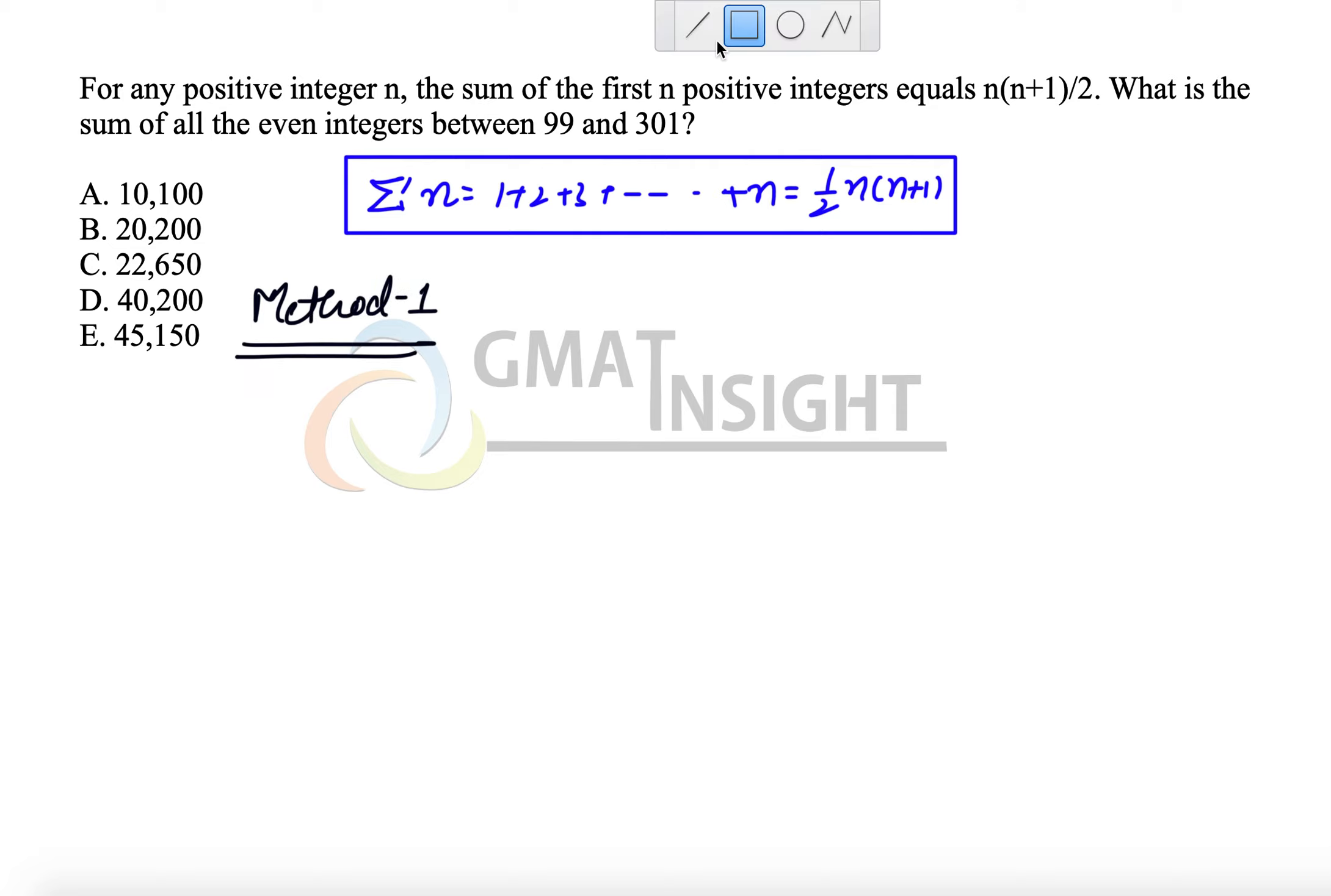Method 1 is based on the principle of arithmetic progression in which the sum of n terms can be represented as n/2(first term + last term). The reason is that the sum of the first and last term will be same as sum of second and second last in any arithmetic progression and so on.